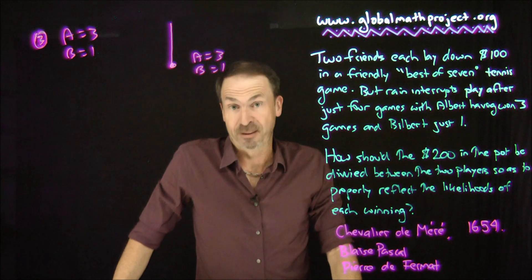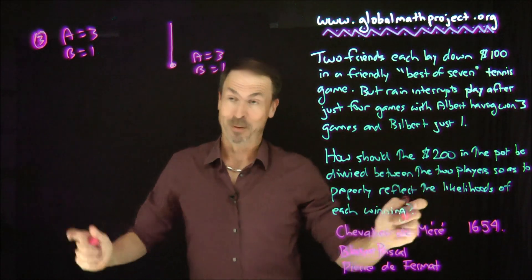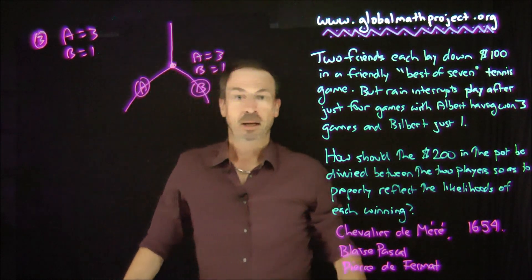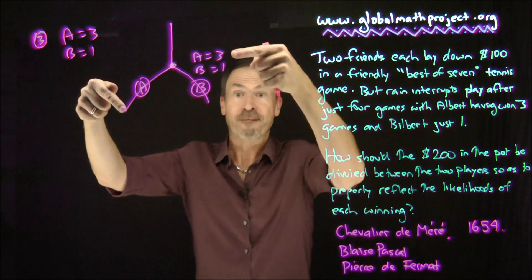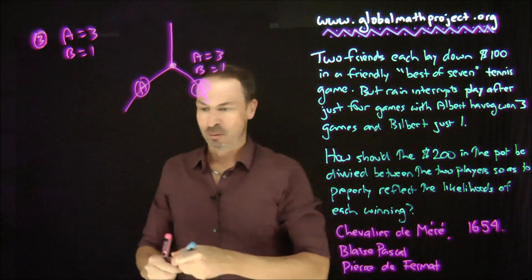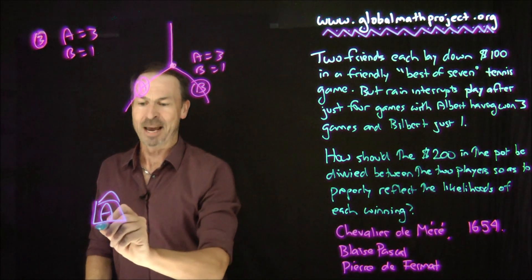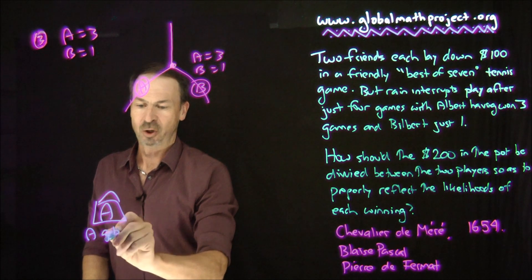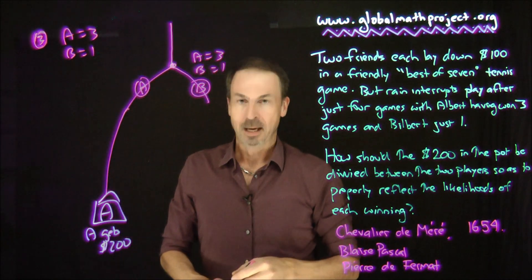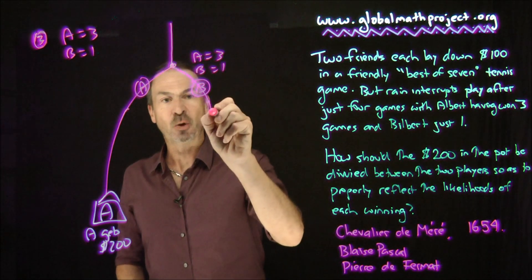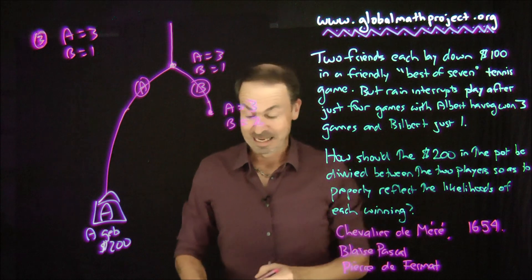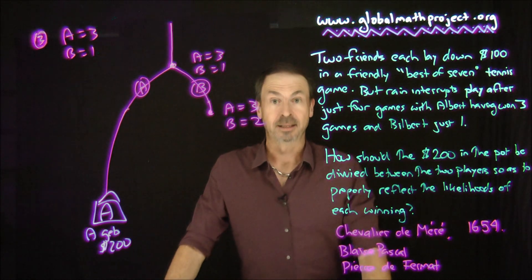So they need to play another game, a fifth game. There's two options. Either Albert will win or Bilbert will win. Now, if Albert wins, it will now be four games for Albert, one game for Bilbert. Four out of seven. That's the win. We can stop there. So we might as well send him straight to the Albert house where A gets $200. If Bilbert wins, however, we're in the situation where Albert's still got three games, Bilbert's now got two games under his belt. They need to play a sixth game.